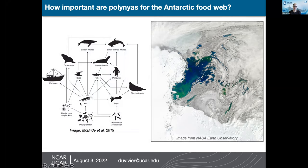Predators can use the ice substrate for other needs throughout their life cycle. We're working to understand the connections between polynias and the rest of the food webs — not just phytoplankton, but also zooplankton and how that might affect things like fish, penguins, or seals.